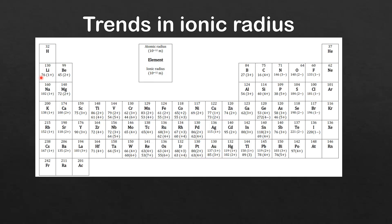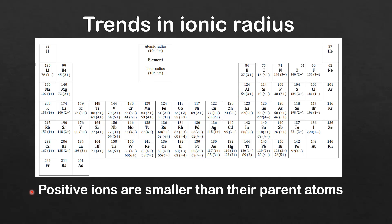Next we'll compare the ionic radius to the atomic radius. Looking at lithium: it forms 1+ ions and the ionic radius is smaller than the atomic radius. For magnesium, which forms 2+ ions, the ionic radius is also smaller than the atomic radius. And for aluminium, which forms 3+ ions, again the ionic radius is smaller than the atomic radius. So from these three examples we can see that positive ions are smaller than their parent atoms.